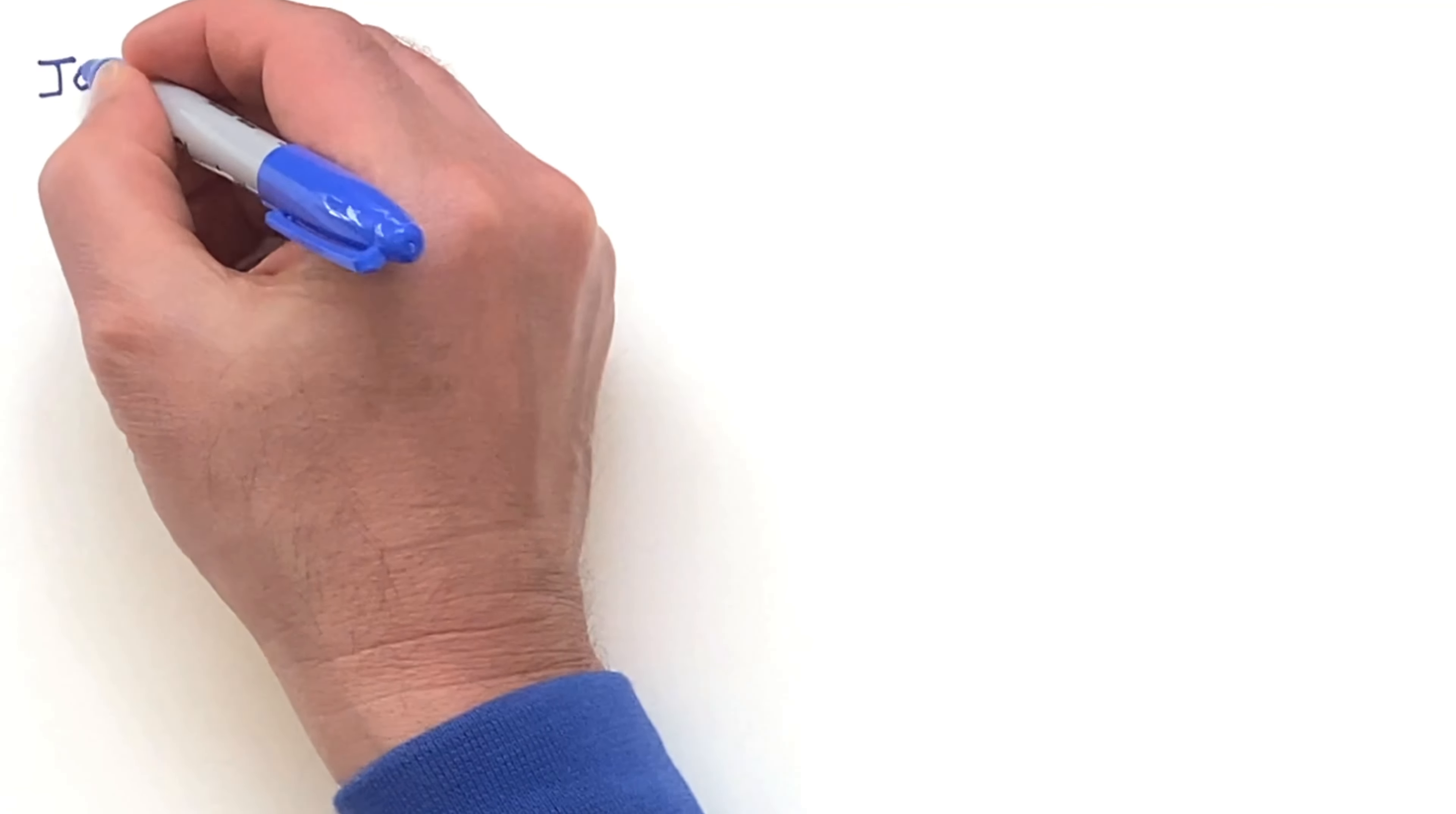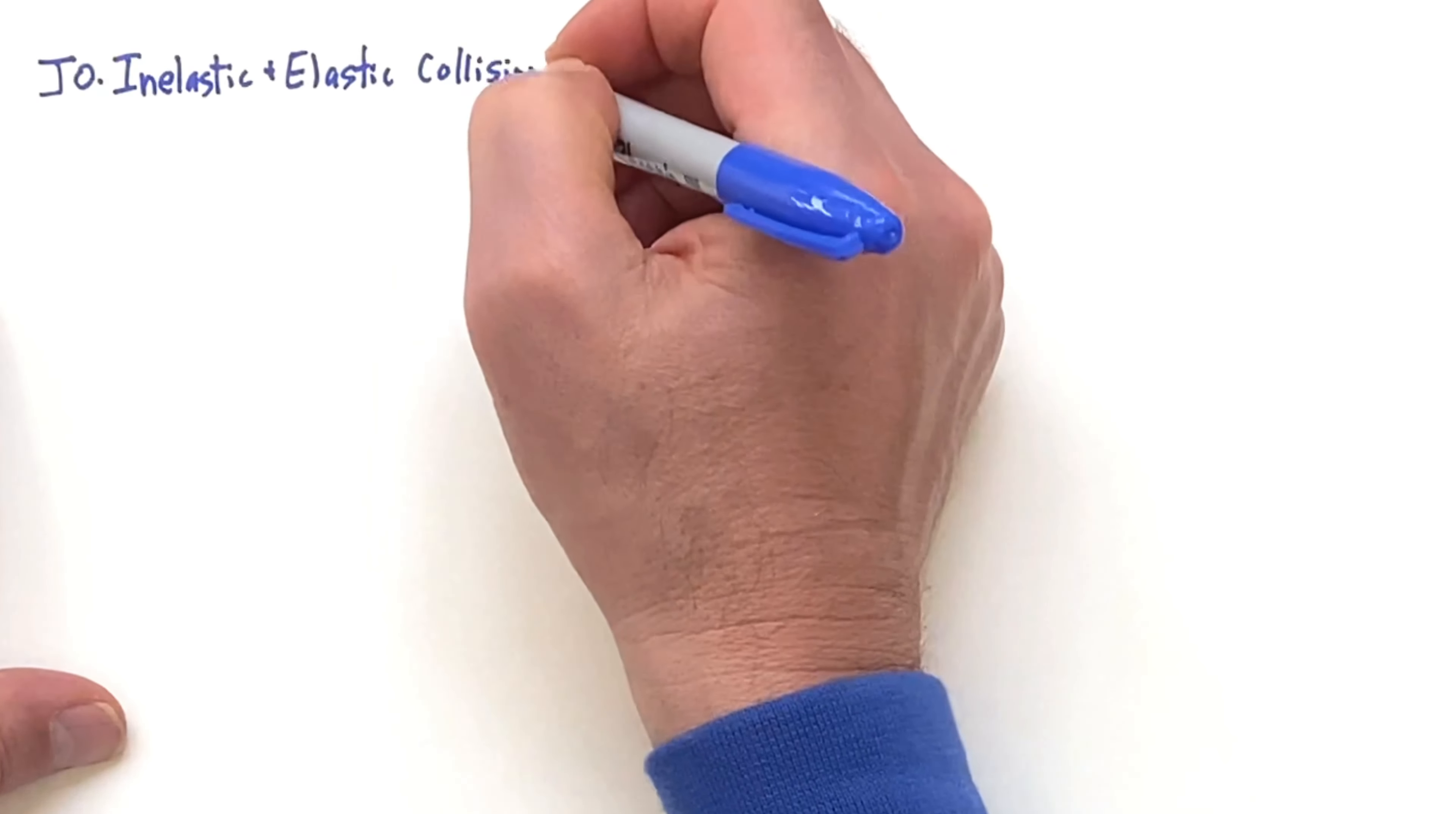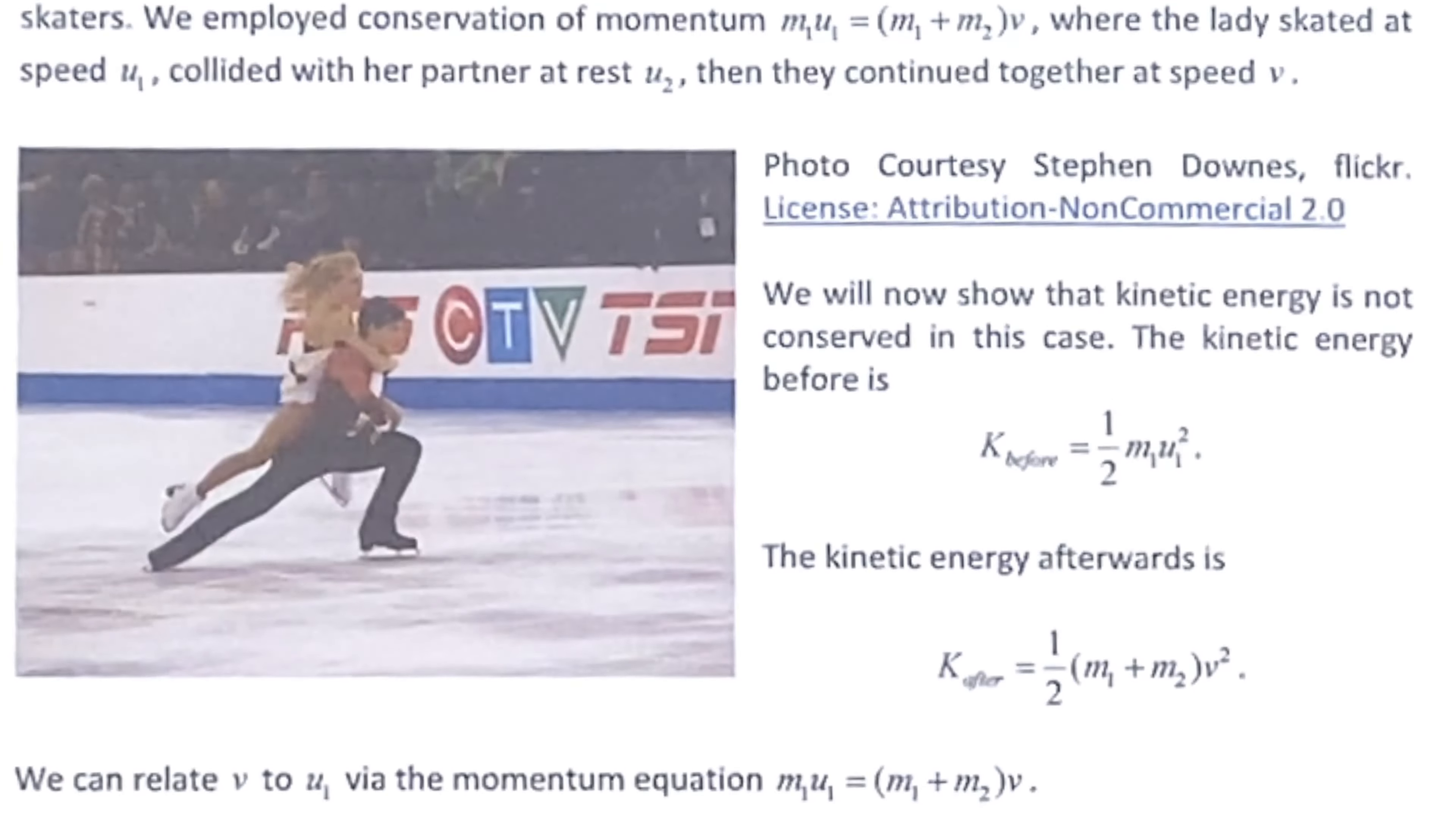Let's get on with collisions. J-0, inelastic collisions. Now we're going to revisit the skaters from the previous chapter, where one skater was skating to the right, the other was at rest, and then the skater coming from the left jumped on the back of the skater together, they moved at the same velocity.